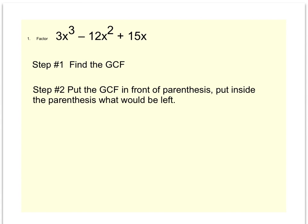This video is called Factoring Polynomials. We have a polynomial with three terms: 3x to the third, negative 12x squared, and a positive 15x. We have to go one step further from the previous video. To factor it, think of it as dividing things out because we want to make things simpler or smaller.